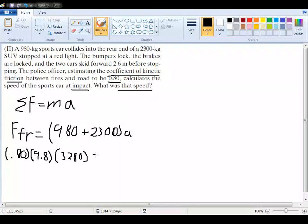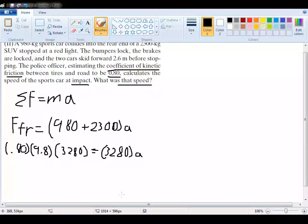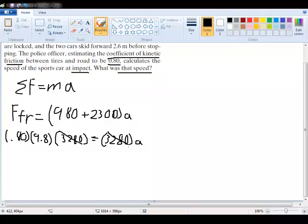And all that is equal to the sum of the mass here, 3280, times the acceleration. Now to solve for a here, it's pretty simple. Both these masses are going to cancel out, and we're just left with multiplying 0.8 times 9.81, which would give us 7.8 meters per second squared.